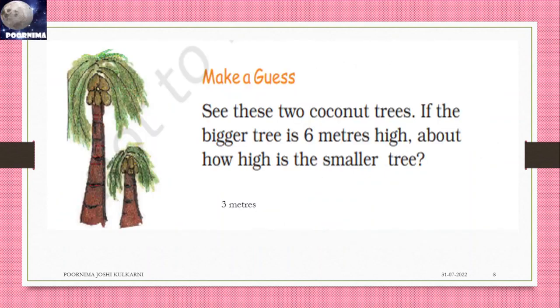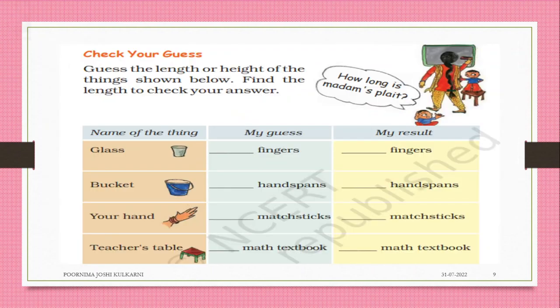Test - Make a Guess: See these two coconut trees. If the bigger tree is six meters high, about how high is the smaller tree? It is half of it: three meters. Check your guess.